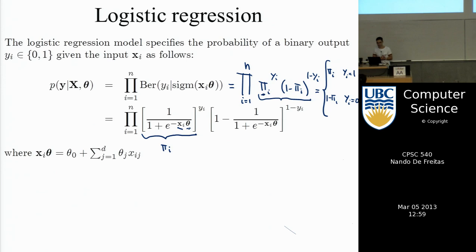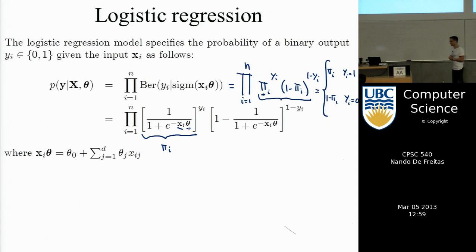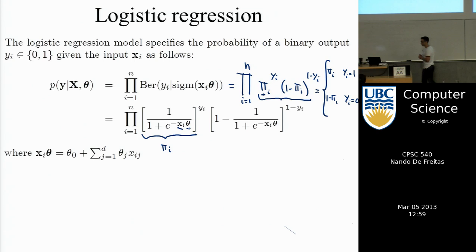We have a likelihood — how do we get an error function? Just like in linear regression where our likelihood was Gaussian and we took minus the log to get the least squares cost function, here we do the same. We take the negative log of the probability to get our cost function. The negative log of p of y given x and theta gives us our objective function j of theta.